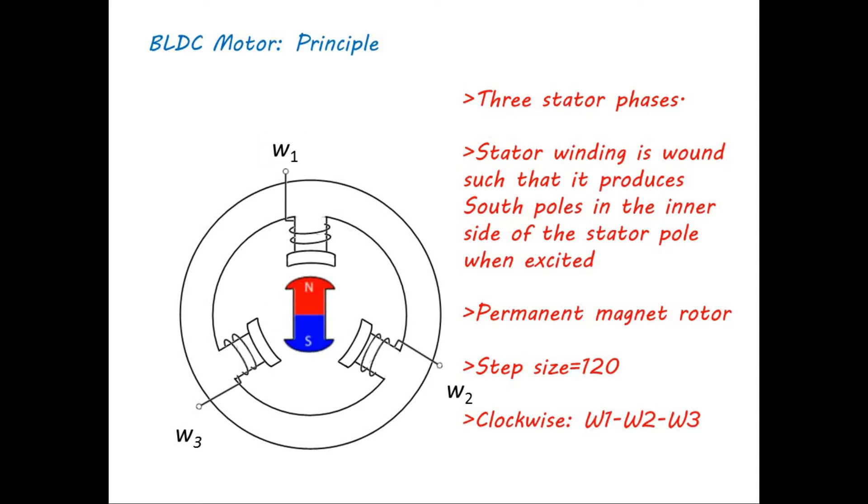To rotate in anti-clockwise direction, sequence of excitation needs to be reversed. For example, after excitation of winding W1, winding W3 must be excited, and finally winding W2 is excited to complete one full revolution in anti-clockwise direction.